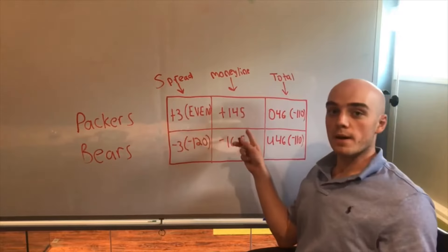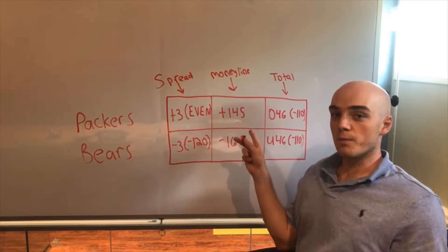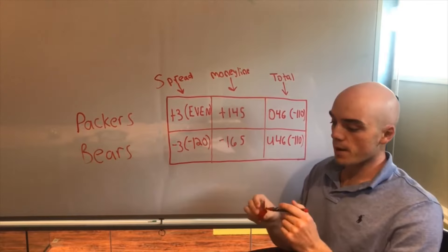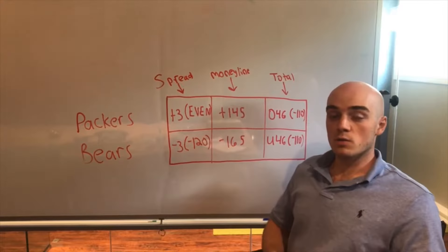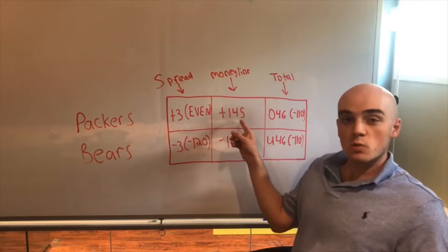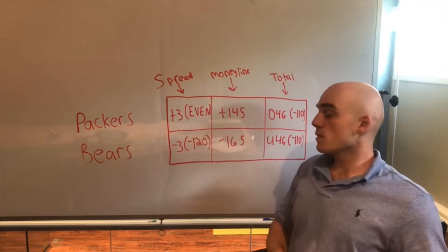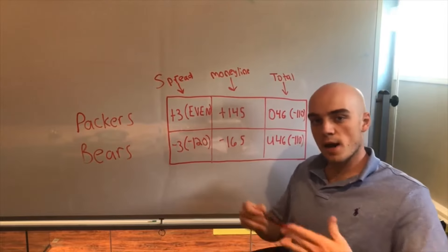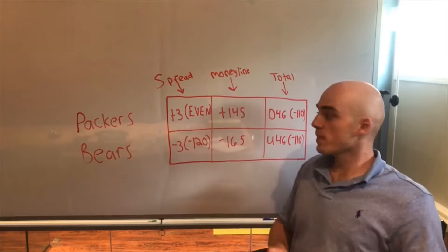So money line bet, what does it mean, what are the payouts, all that good stuff? The money line bet is essentially a flat-out bet on who the winner of the game is going to be. If you bet on the Green Bay Packers to win on the money line, then as long as the Packers win, you win your bet. If there's a tie you get your money back. The Packers lose, you lose your bet.